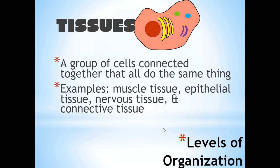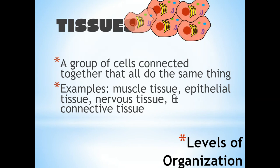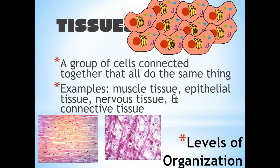The next one is a tissue. A group of cells come together and they form a tissue. Lots of cells come together — they're very similar and they do the same thing. So we would have muscle tissue, epithelial tissue, nerve tissue, and connective tissues.